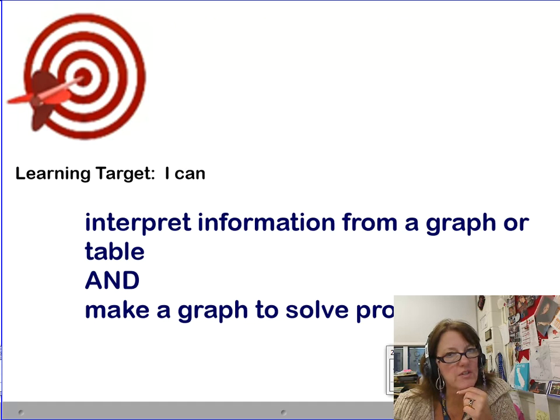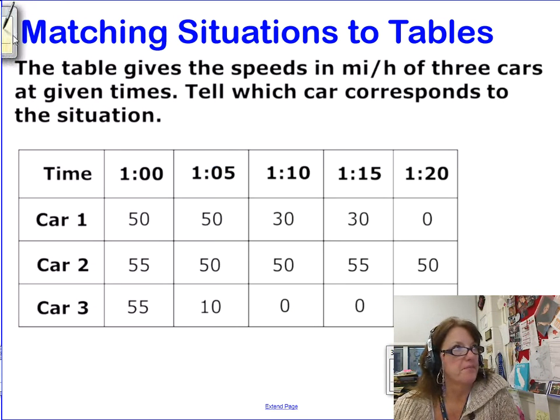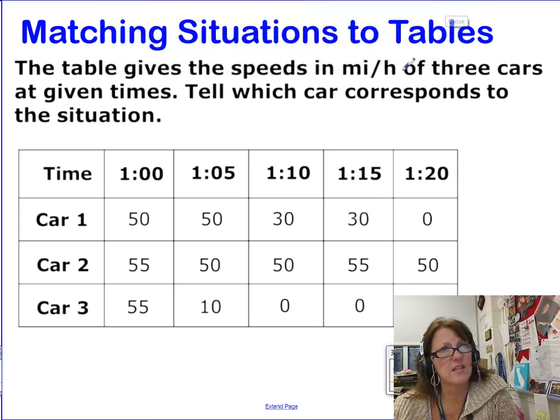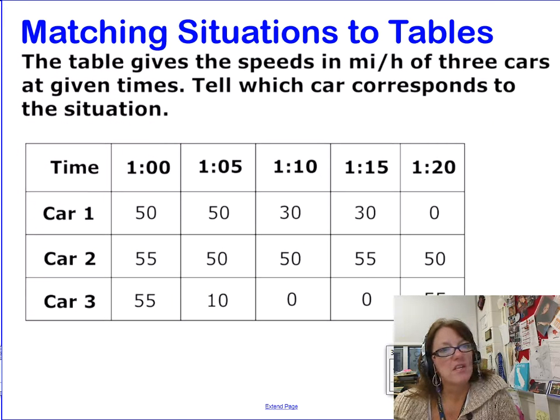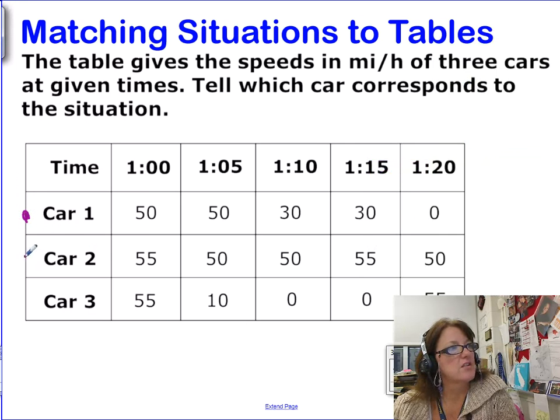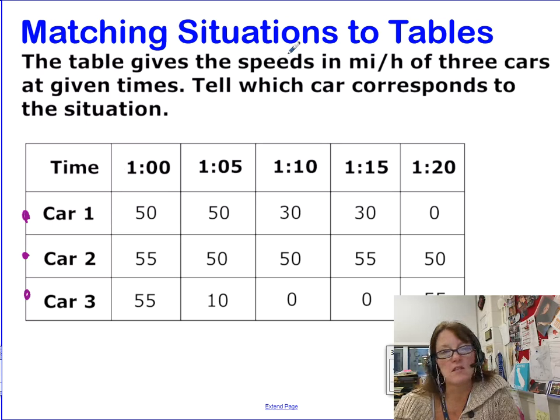Let's take a look at what we're going to do. Now, there's a whole lot of stuff on the screen, so stop freaking out. Here's what I want you to write down. Where it says matching situations to tables, put that up at the top. And the only other thing I want you to write down is right here for car one, car two, and car three. This table looks like a bunch of mumbled jumbled numbers, but it's really telling us a story. It gives us the speeds in miles per hour of three different cars over a certain series of time.